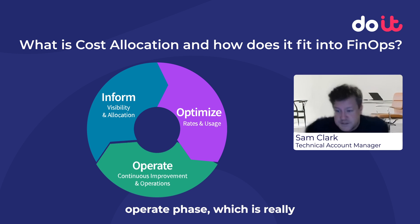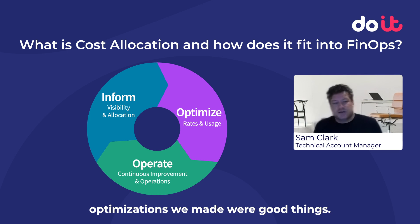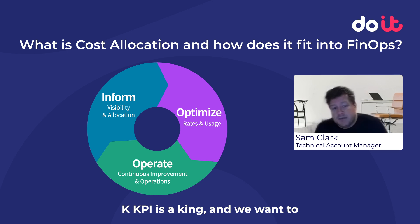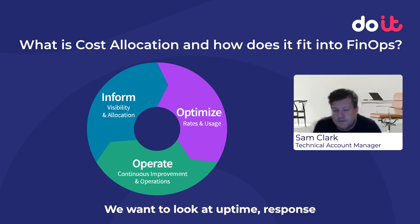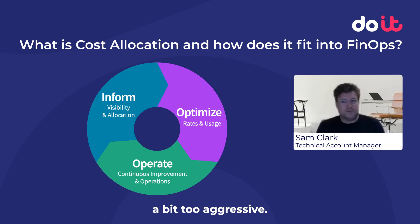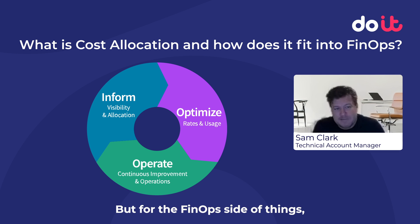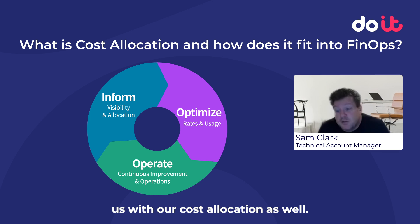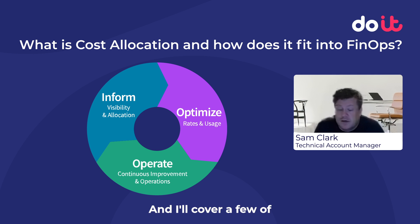Finally, we go into the operate phase, which is really where we're trying to check that the optimizations we made were good things. KPIs are king and we want to try to use business KPIs where possible in the operate phase. We want to look at uptime, response times, order rates, and if we see big changes in those, then maybe we've over-optimized or gone a bit too aggressive. For the FinOps side of things, we can add a few KPIs that help us with our cost allocation as well, and I'll cover a few of those as we move forward.